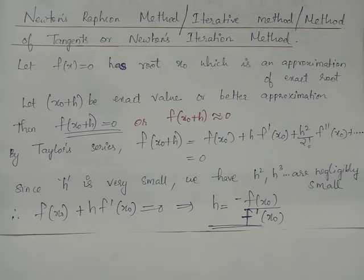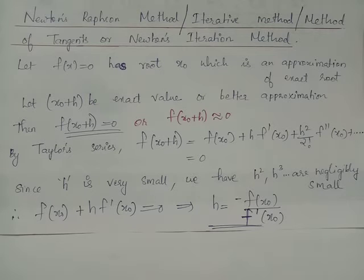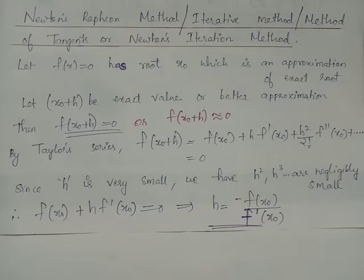From this expression for h, notice that whenever f'(x) is a very large quantity, h will be obtained as a very small quantity. That is, in order to maintain h as a very small quantity, the slope of the function f(x), which is f'(x), must be very large. This guarantees that the Newton-Raphson method gives better results whenever the slope of the given function f(x) is very large.